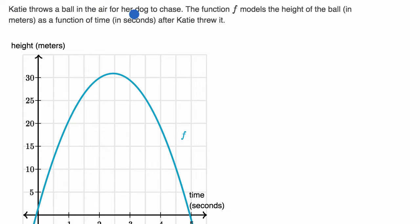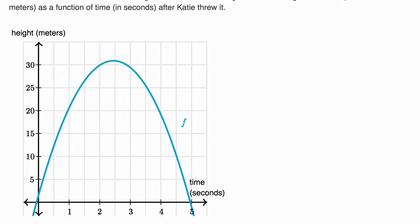Katie throws a ball in the air for her dog to chase. The function f models the height of the ball in meters as a function of time in seconds after Katie threw it. And we can see that right over here. This is our function f.